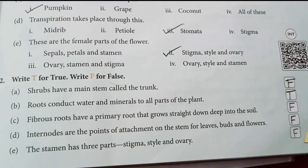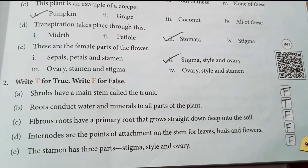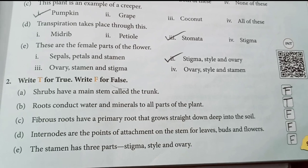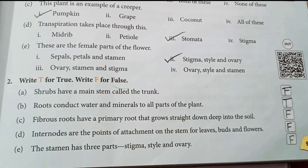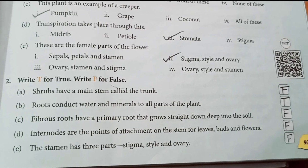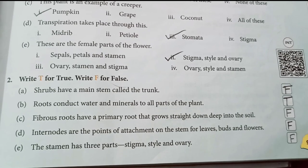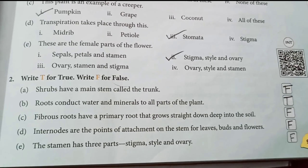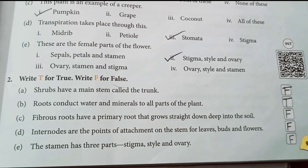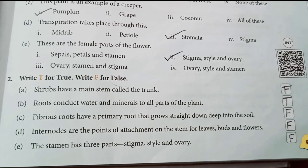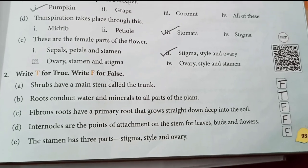True or False. (a) Shrubs have a main stem called the trunk — False. (b) Roots conduct water and minerals to all parts of the plant — True. (c) Fibrous roots have a primary root that grows straight down deep into the soil — False. (d) Internodes are the points of attachment on the stem for leaves, buds and flowers — False. (e) The stem has three parts: stigma, style and ovary — False.